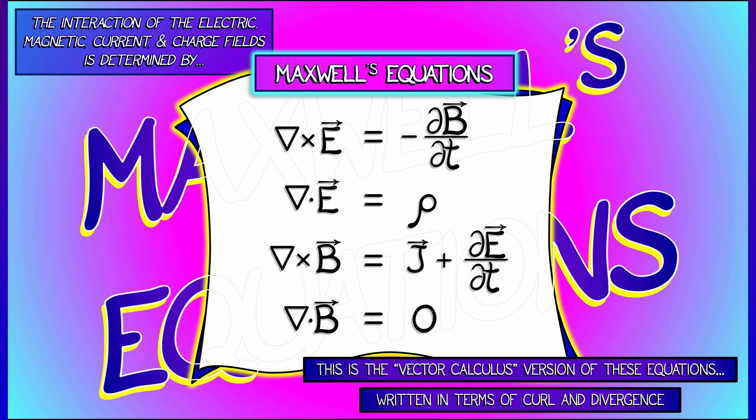The first equation says that the curl of the electric field is minus the time rate of change of the magnetic field. The second equation says that the divergence of the electric field is equal to rho, the charge density. The third equation says that the curl of the magnetic field is equal to the current field J plus the time rate of change of the electric field. And the last equation says that the divergence of the magnetic field is zero.